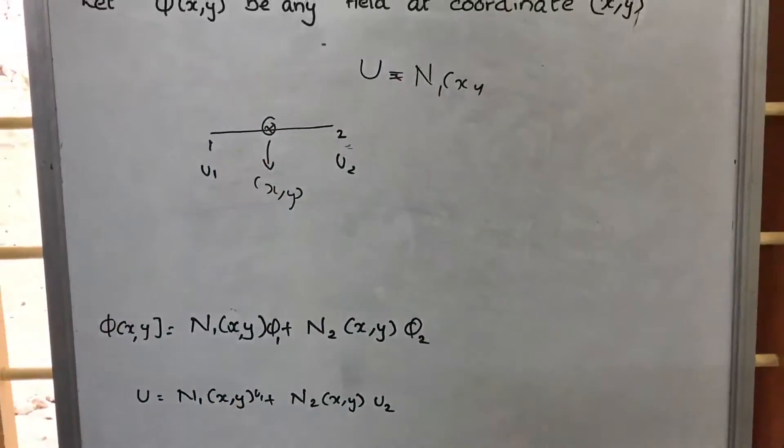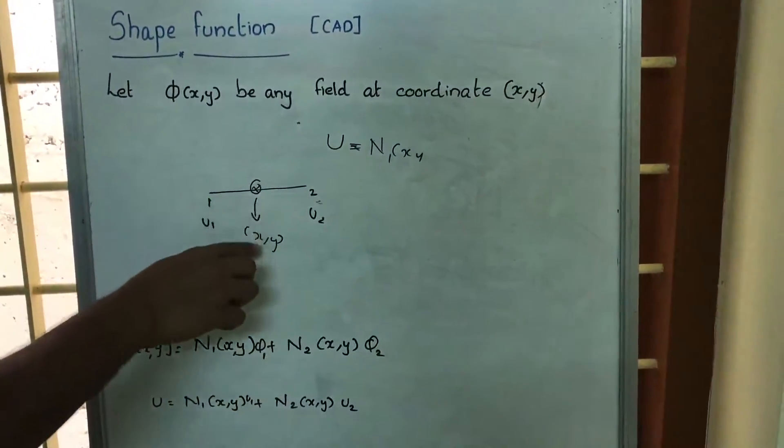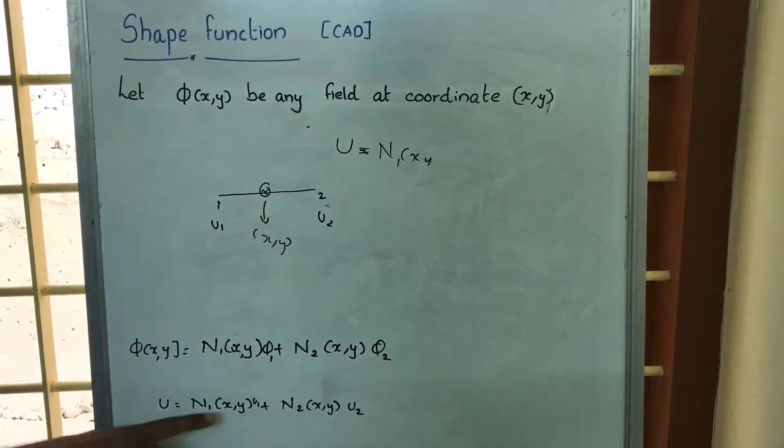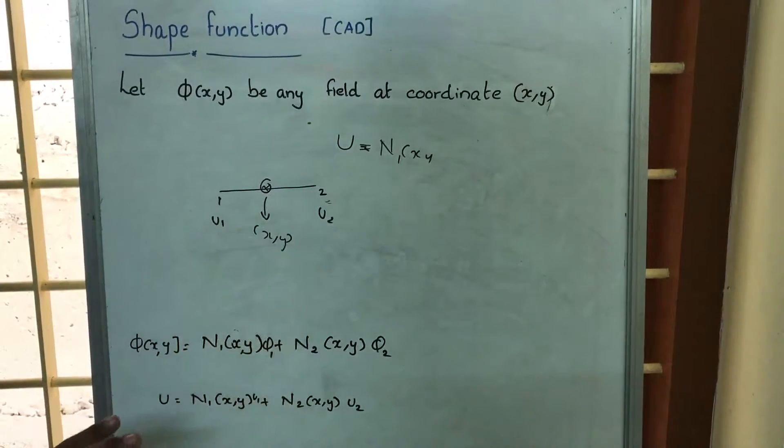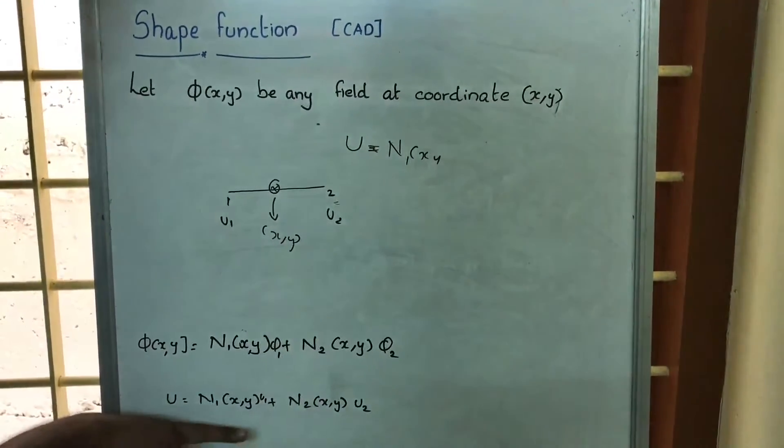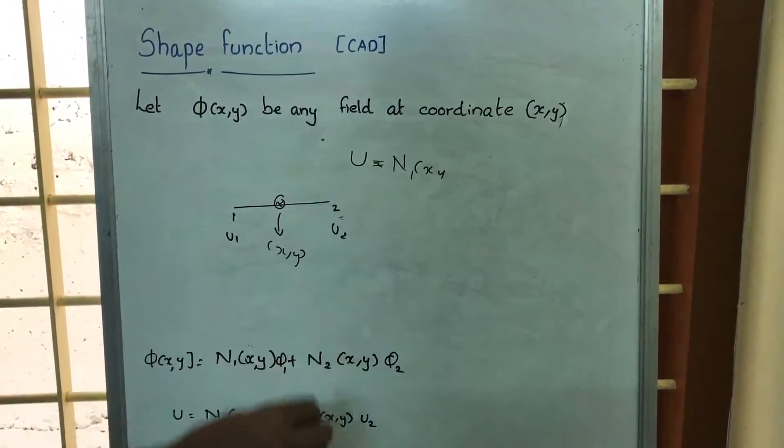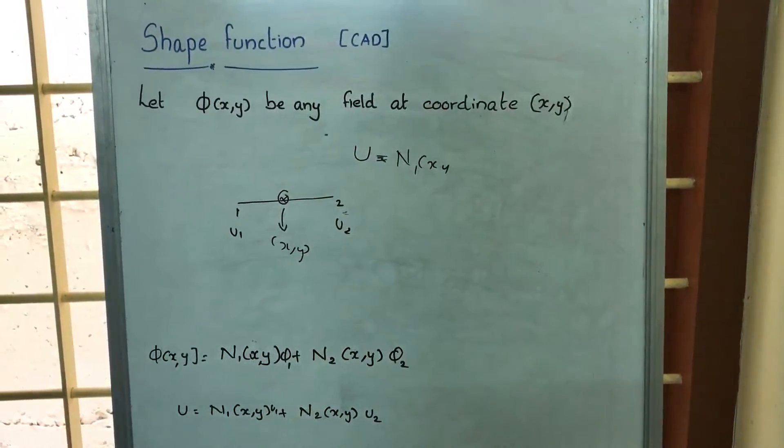So when we are looking at it, we are finding the displacement at this point by some interpolation technique where we are using two functions N1 and N2. These two functions can be called as interpolation function, or this is what we call as the shape function. So the peculiarity is,